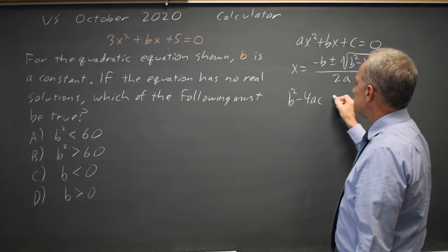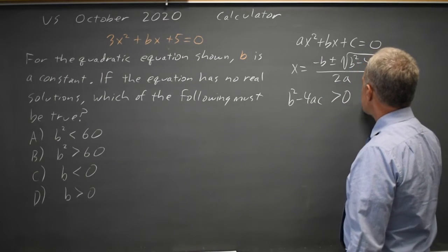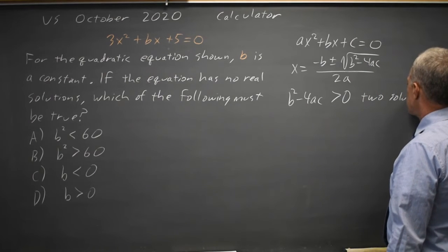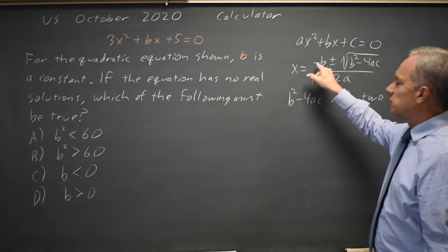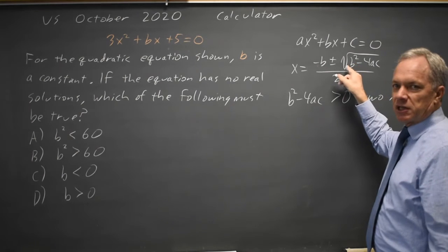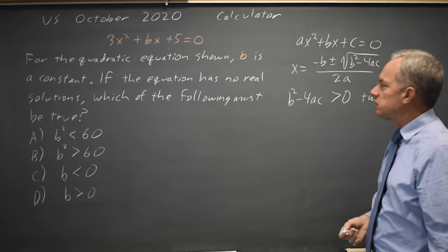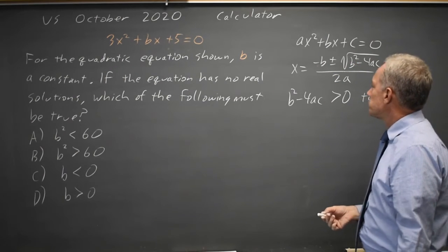If that's greater than zero, two solutions. Because you get negative B plus that value and negative B minus that value and that gives you two real solutions when you divide by 2a.